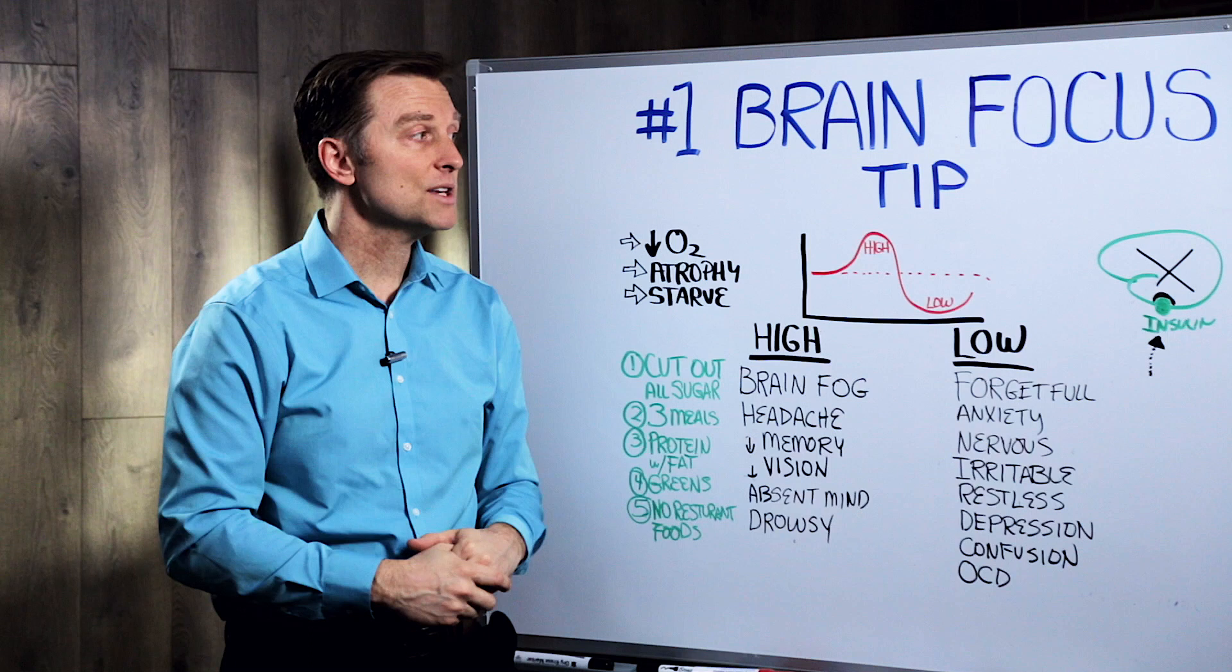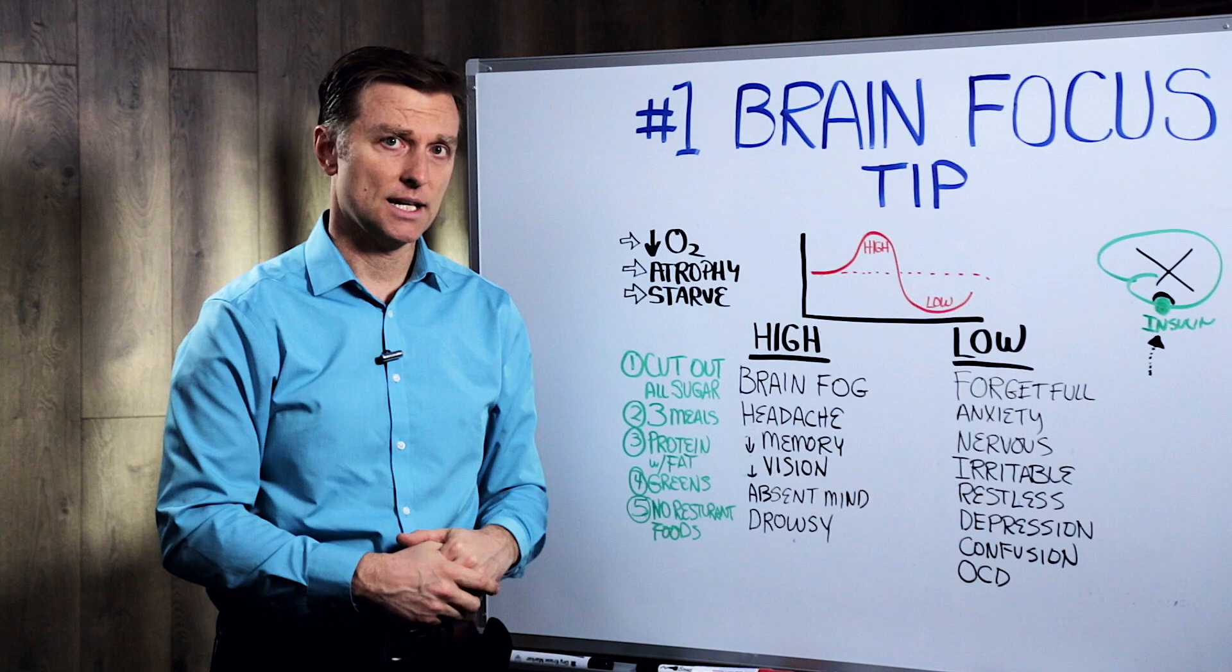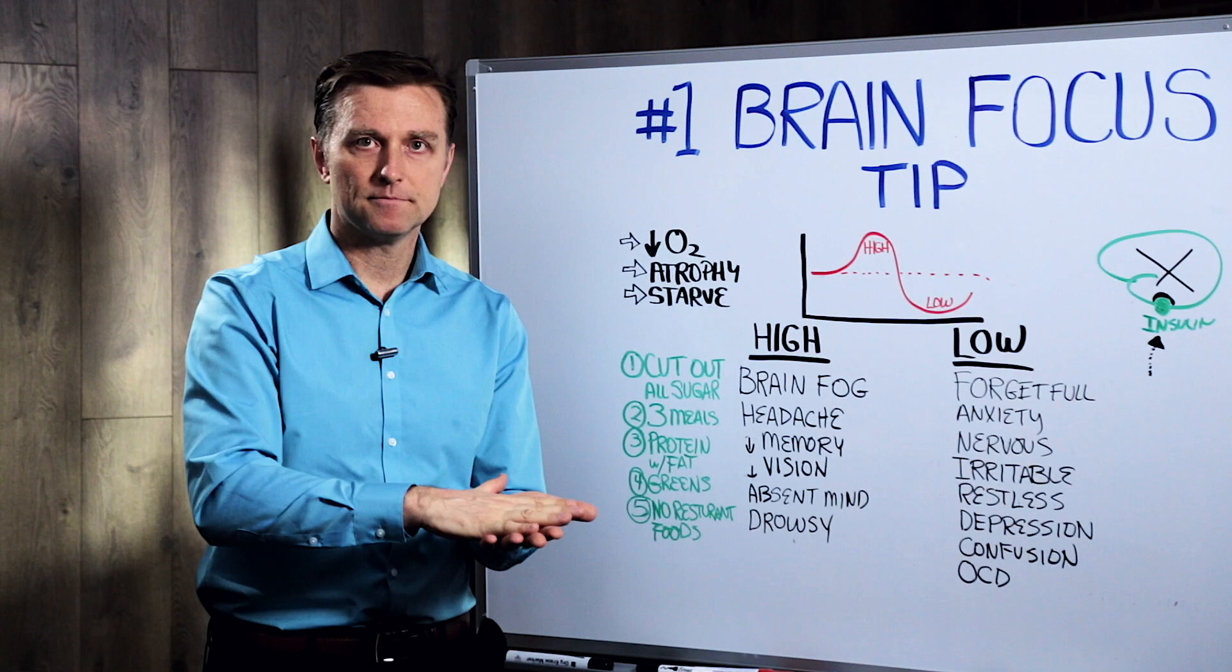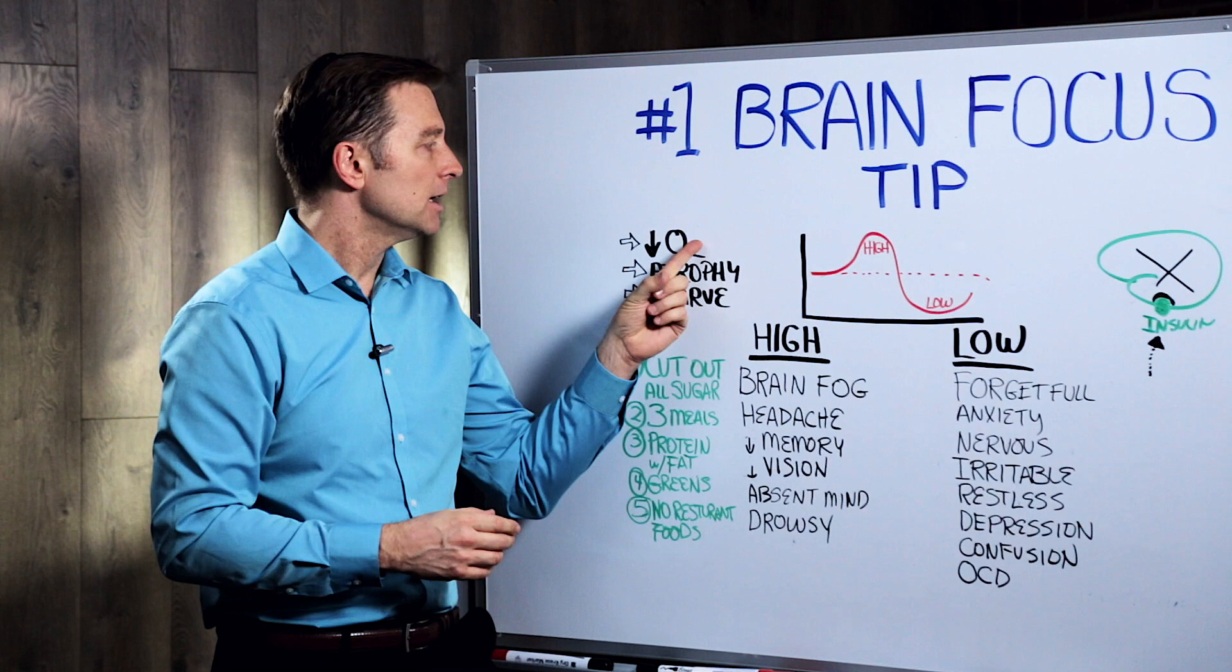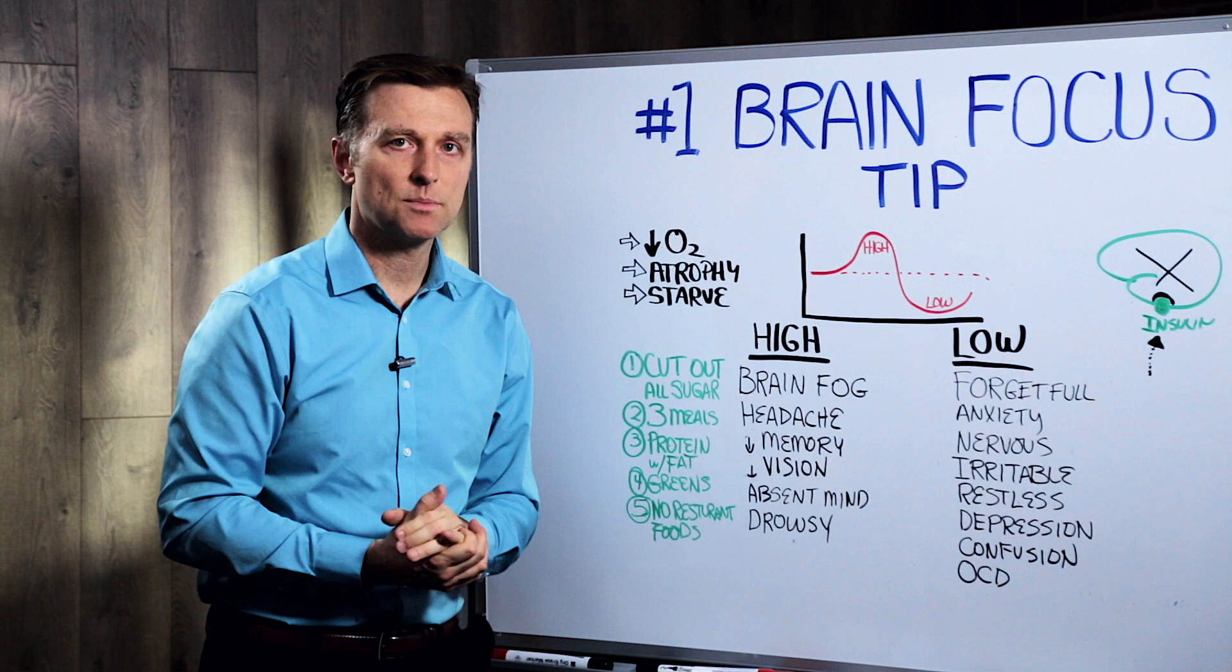But your brain would be much better if it ran on a different fuel source. And it's called ketones. And to do that, you have to drop your sugars way, way, way down as close to zero as possible, actual added sugar and things like that. And you would compensate by adding a little bit more fat.